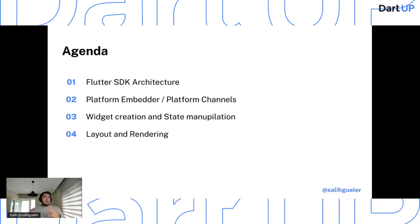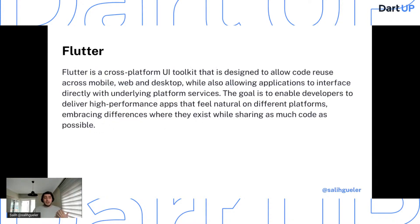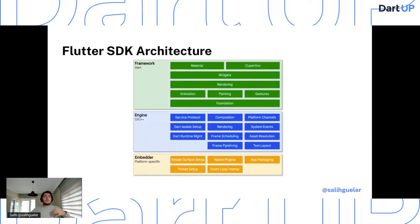How do we pass data into the proper addresses and get the view we want on screen? Let's start with Flutter SDK's architecture. Flutter is Google's cross-platform UI toolkit — the idea is to write code once and run it everywhere with as much shared code as possible. You also need high performance, because if you don't have high performance there's no point to an SDK like this.